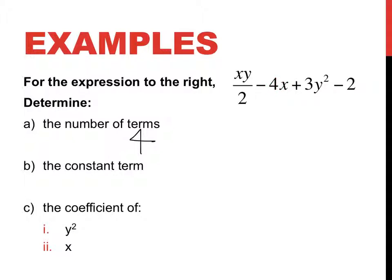xy divided by 2 is a term because it is joined together by division. So there are four terms. What term's constant? Well, that's got pronumerals in it, so it can't be that term. That's got pronumerals, so it's not that one. That's got a pronumeral, so it's not that one. Negative 2 is your constant term.